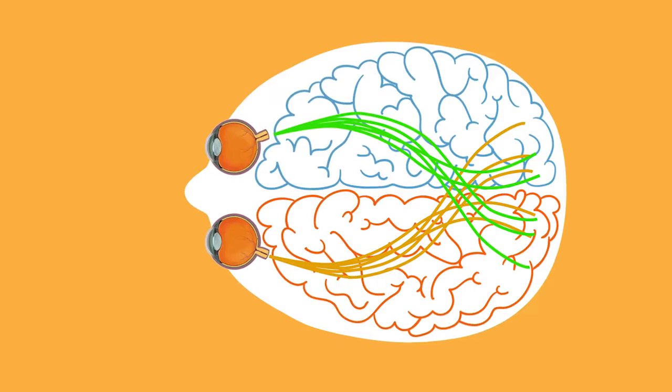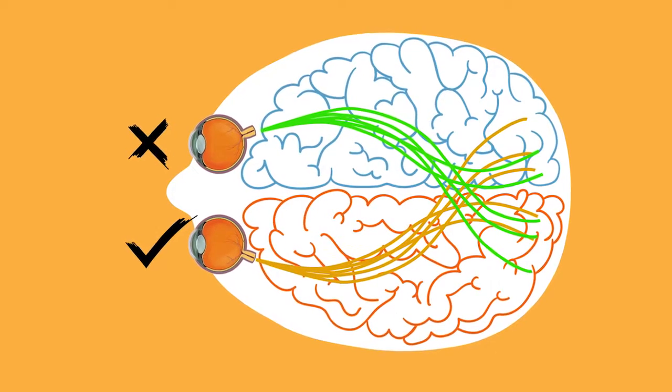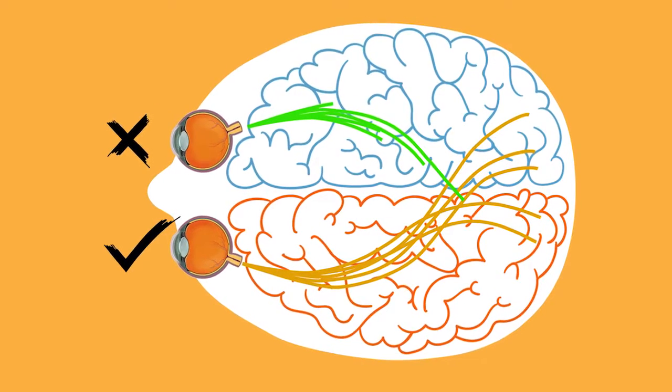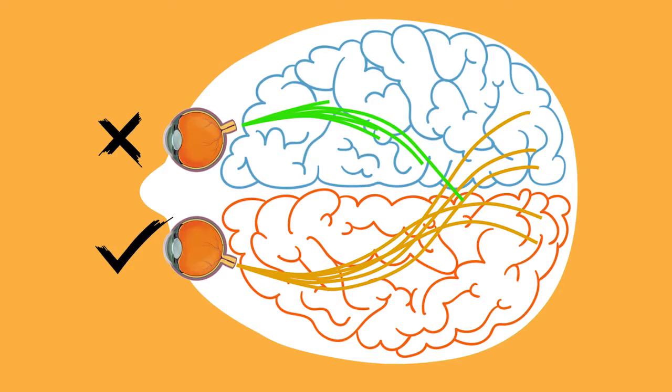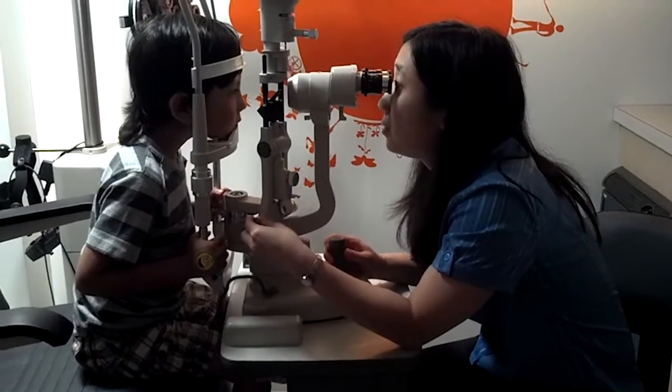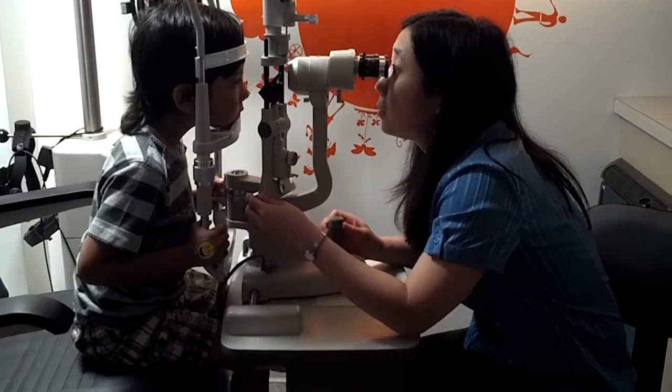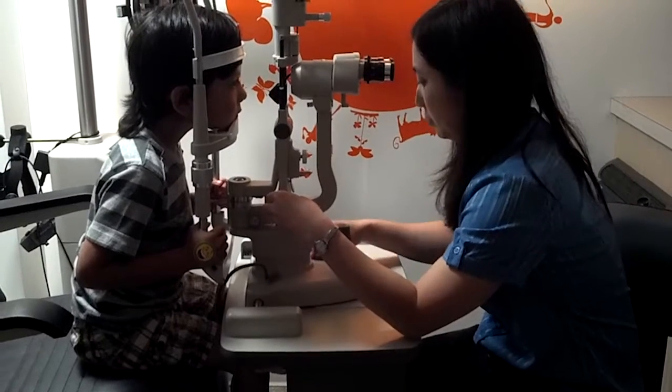There are different causes of amblyopia. If one eye sees better than the other, the brain may favor the better eye and not develop good connections with the eye that sees worse. The two eyes can see differently because of the shape of the eyes or because one eye turns inward or outward.